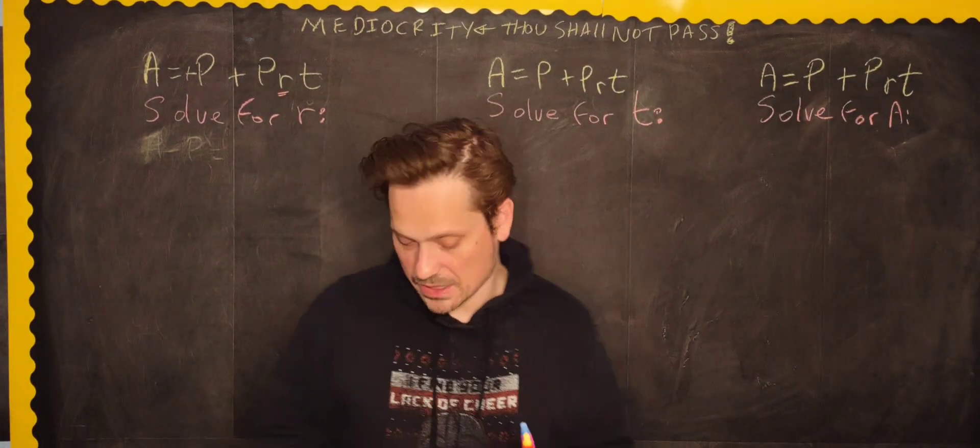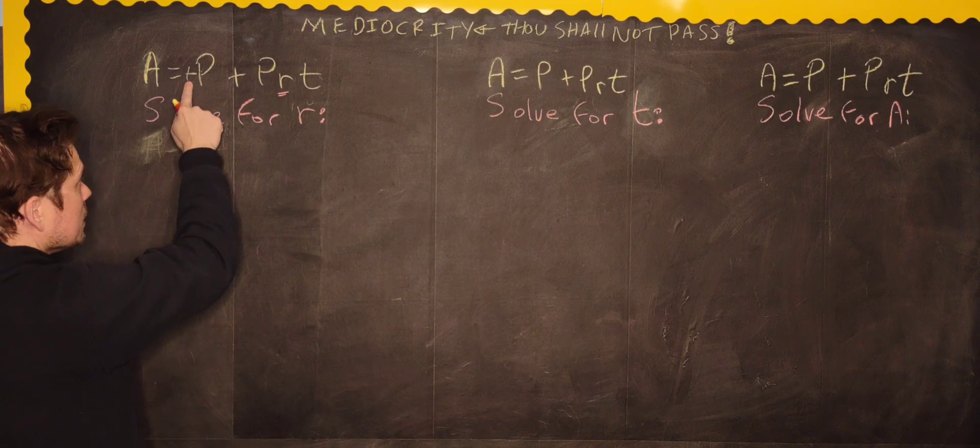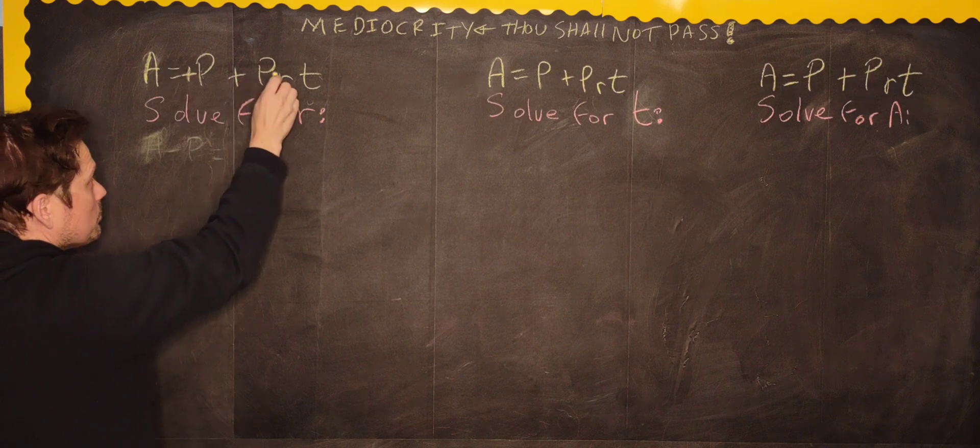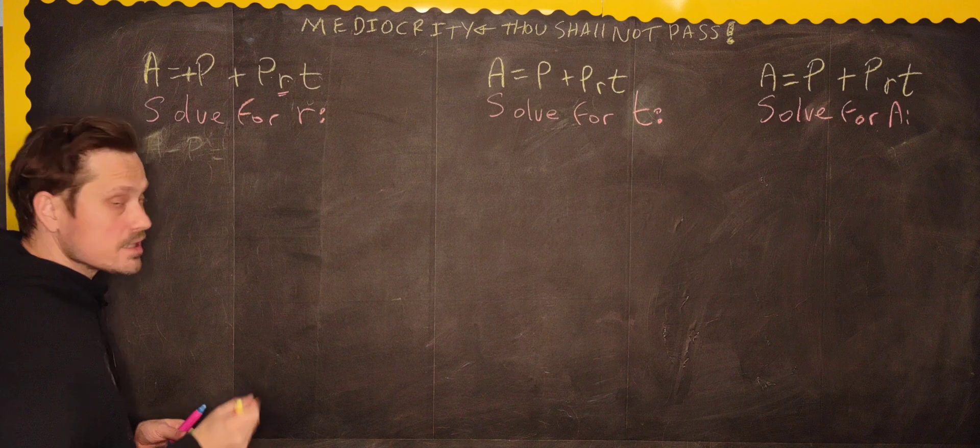So let me show you an example. Here we have A equals positive P, so I'm going to stress this. It's positive P plus PRT. Say the goal is to get R by itself. Isolate R.